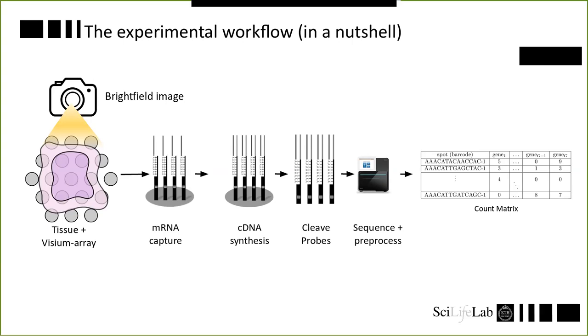For the experimental workflow, just to briefly summarize - I'm not in the lab doing this, so this is very much an overview. What you do is take your sample, your tissue of interest, put it on the Visium array, take a bright field image. This is used later as a reference to back map the gene expression to where in the tissue you capture these transcripts. You do mRNA capture, cDNA synthesis, cleave off the probes and put them into the sequencer. There's preprocessing and out comes a count matrix. This is very similar to what you'd observe in a single cell experiment where you have genes along one dimension. But rather than cells, you have spots along the other dimension. These spots have barcodes and the barcodes are associated with specific spatial coordinates. Are there any questions so far? No, doesn't seem like it. Great.